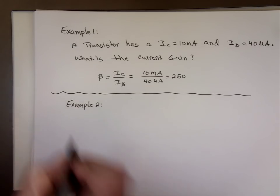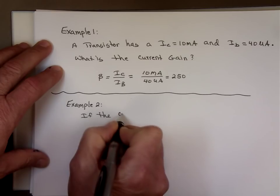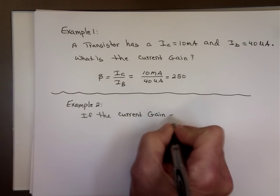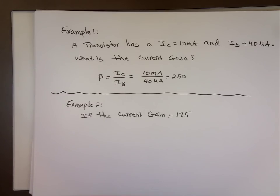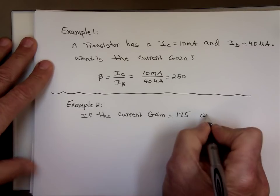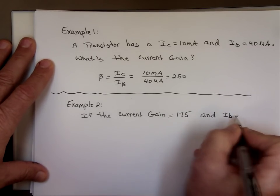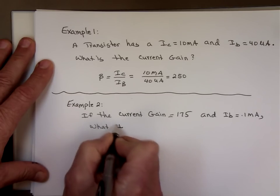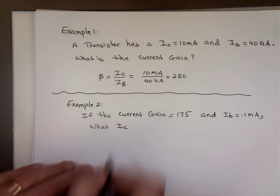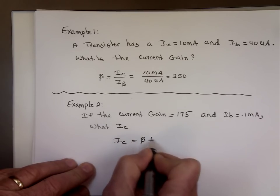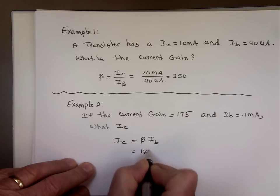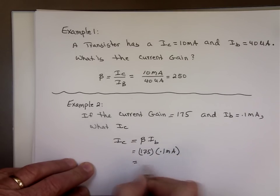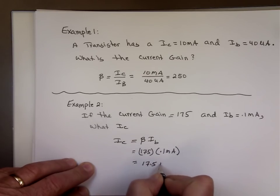Another example: if the current gain beta equals 175 and I sub B equals 0.1 milliamp, what is I sub C? Remember, I sub C equals beta times I sub B. So I sub C equals 175 times 0.1 milliamp, which equals 17.5 milliamp.